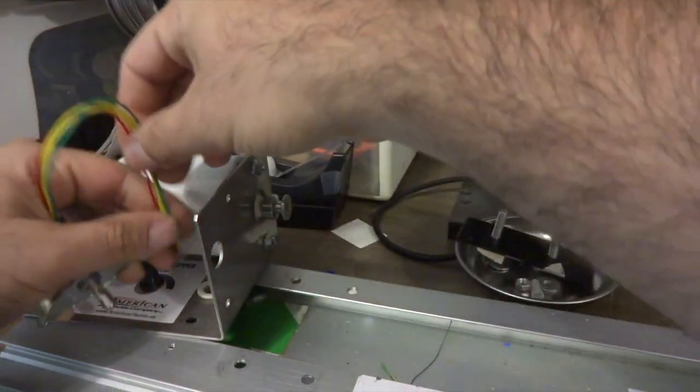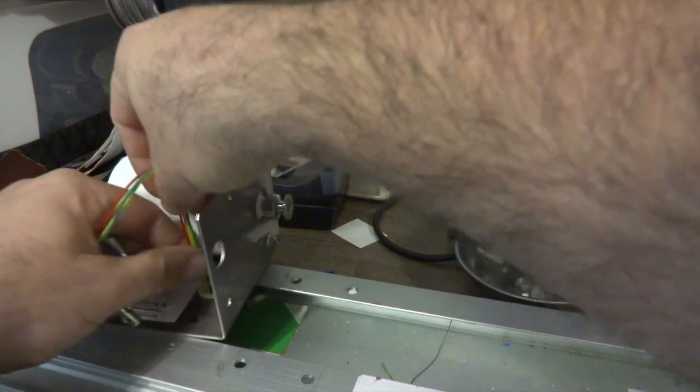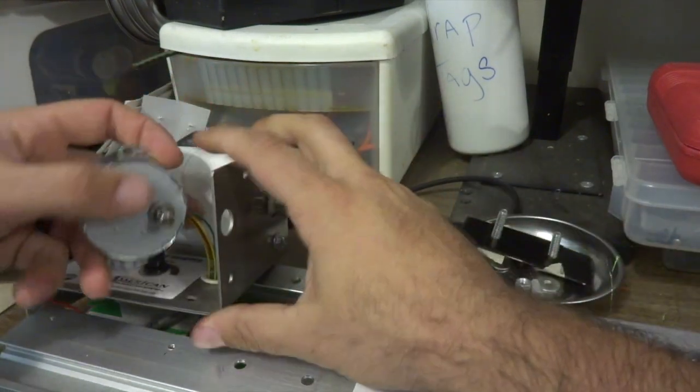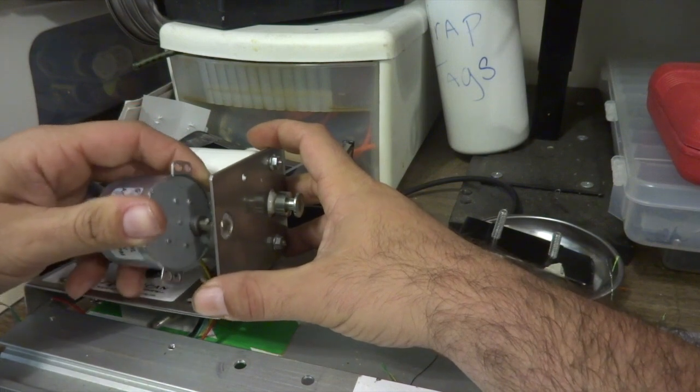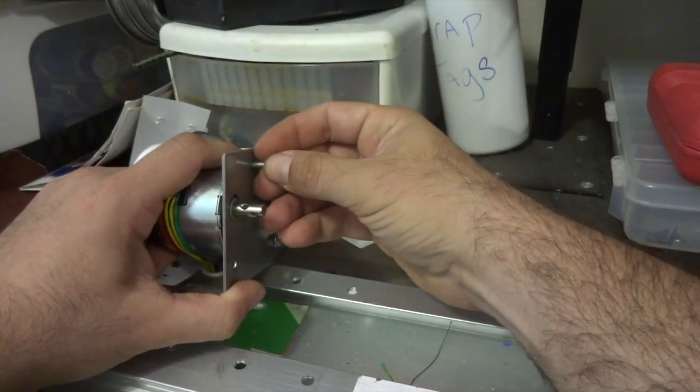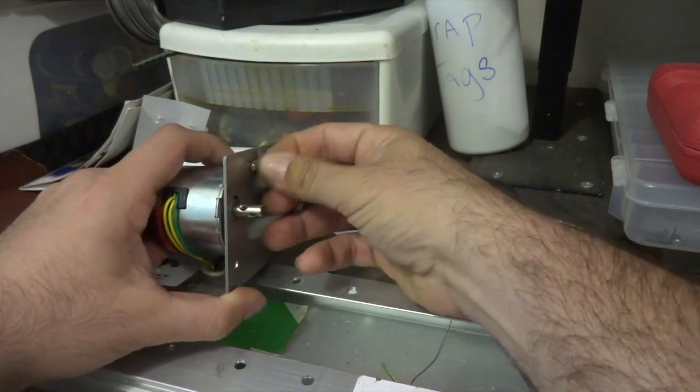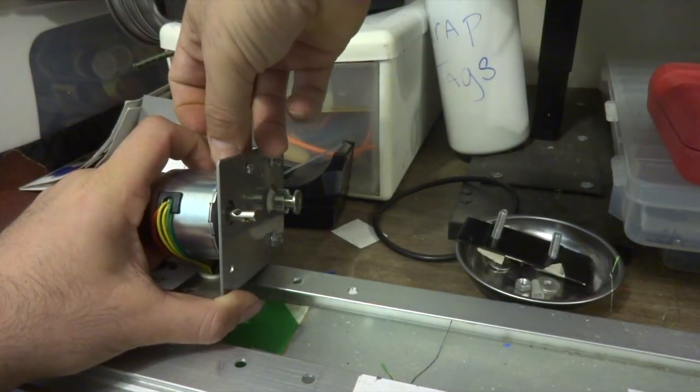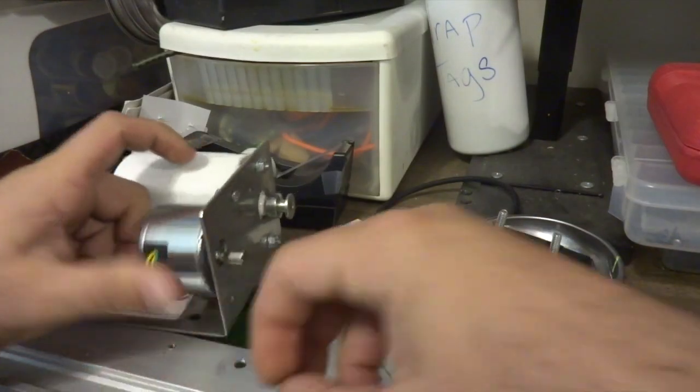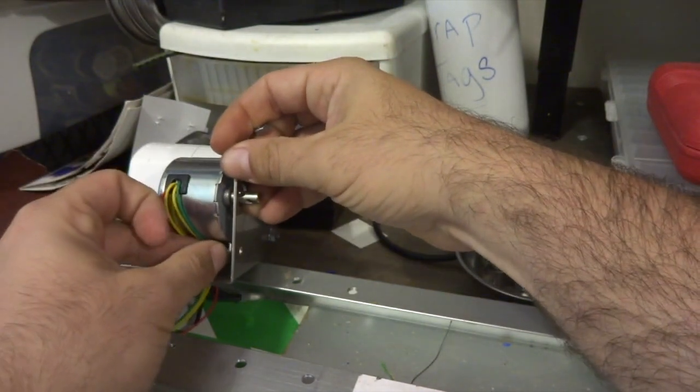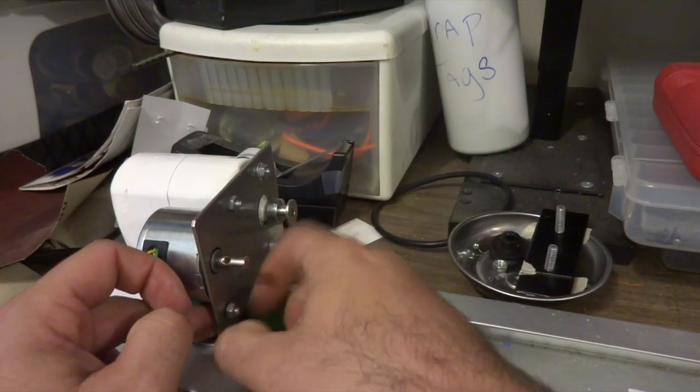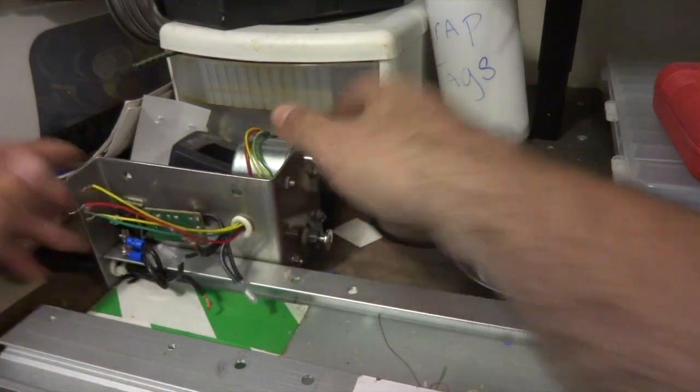First thing we're going to do is take the wires and feed them through this port here, where the power wire for the wrapping motor is. We're going to fit all those through, grab and pull those out. Now we're going to loosely mount this and give it a little turn. We're going to have a lot more wire sticking out, but it's going to be what I want. Just get that nut turning so it's not going to fall off. We're going to turn it over now.